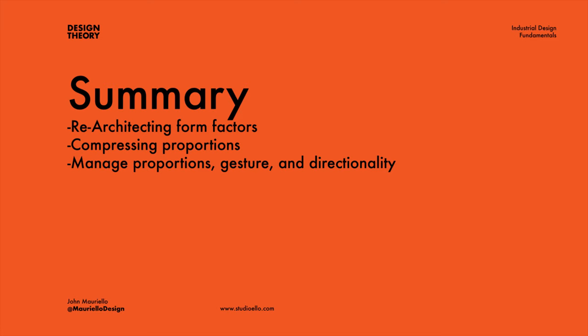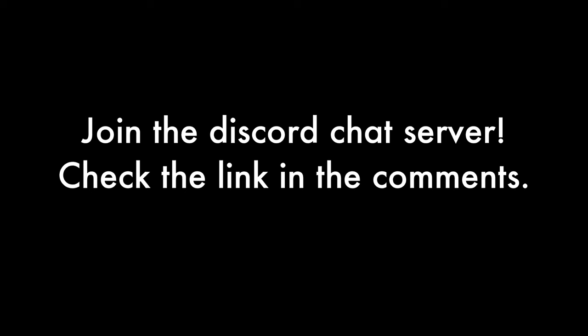In summary, changing the proportions and overall shape of your silhouette is probably one of the best ways to make an icon. It all comes down to re-architecting and compressing your designs — managing the proportions, gesture, and directionality. If you want to talk more about design and share your work with other designers, join the Discord channel; the link is in the description.